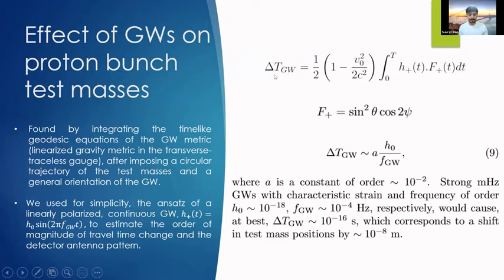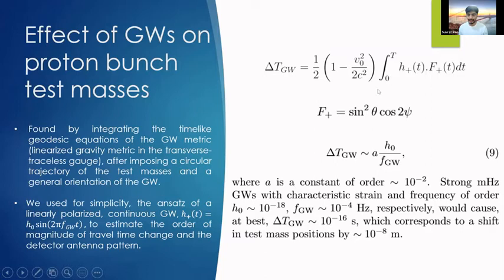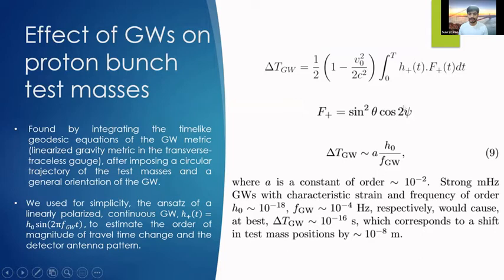We perform a general relativistic calculation, starting from the well-known linearized gravity metric in the transverse traceless gauge. We calculate the time-like geodesic equations for test masses in a circular trajectory as in storage rings, integrate them, and find the deviation of travel time from its expected value. This delta-t_GW is the main signal: the arrival time of a particle at the detector minus the time it would have arrived without gravitational waves — analogous to the timing residual in pulsar timing. This quantity is an integral of h_plus(t), the gravitational wave waveform, convolved with the antenna pattern f_plus, which depends on the orientation of the gravitational wave relative to the storage ring.